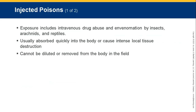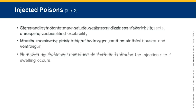Injected poisons include intravenous drug abuse and envenomation by insects, arachnids, and reptiles. They are usually absorbed quickly into the body or cause intense local tissue destruction. The faster a substance gets into the bloodstream, the quicker you will see the effects, and it cannot be diluted or removed from the body in the field. Signs and symptoms may include weakness, dizziness, fever, chills, unresponsiveness, and excitability, which puts a lot of stress on the cardiovascular system. Monitor the airway, provide high-flow oxygen, and be alert for nausea and vomiting. Remove rings, watches, and bracelets from areas around the injection site if swelling occurs.